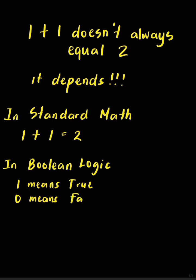And in the world of string concatenation, where numbers are treated as text, one plus one becomes eleven because the two strings are joined together instead of being added.